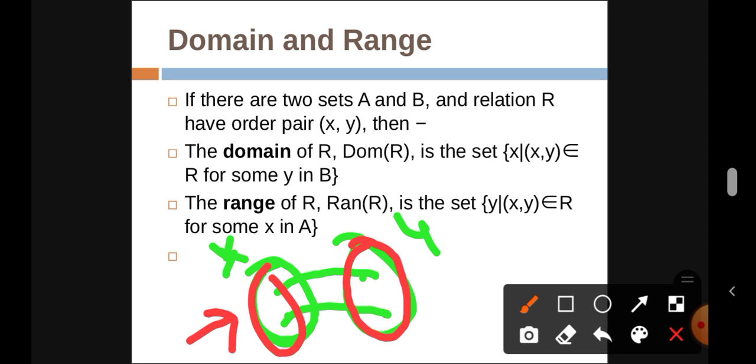The domain is the x in the (x,y) relation. Domain is the set of x where x is in A. That's the domain. Range means the set y which has some x in A.